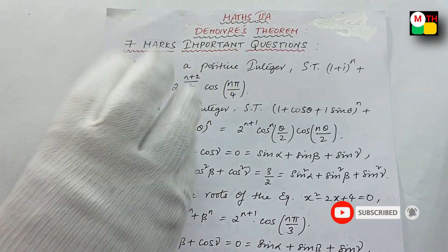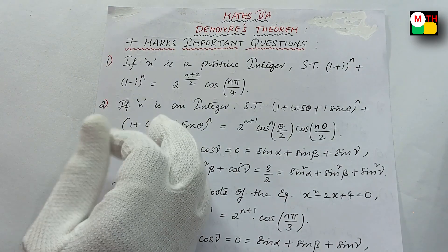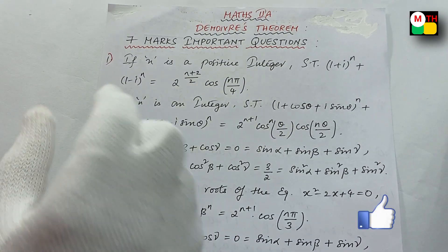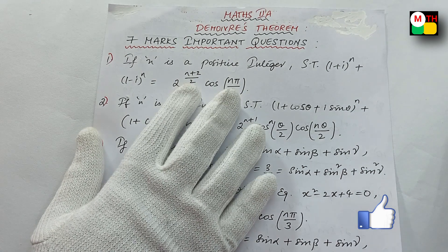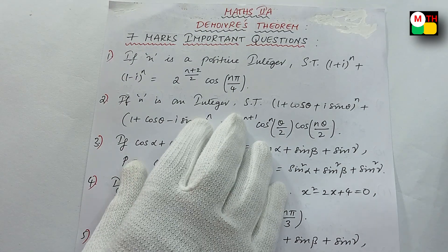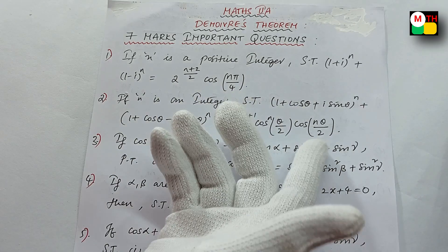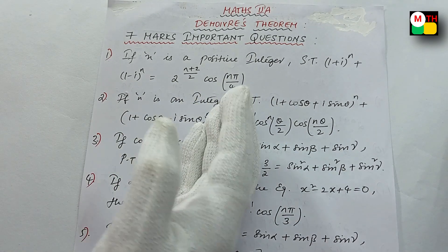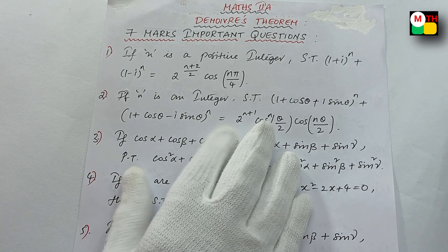7 mark important questions — actually you should start before time. First, Maths 2A: De Moivre's Theorem. Chapter 1 is De Moivre's Theorem. 7 marks are very important here. These are the important questions.